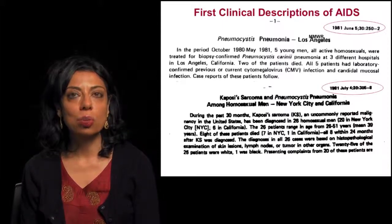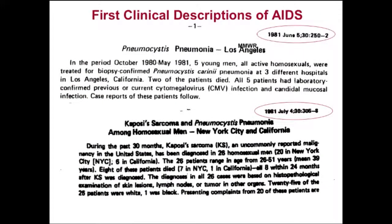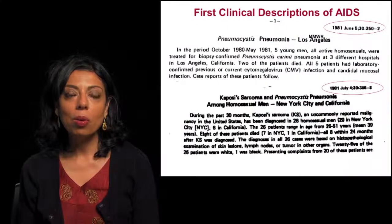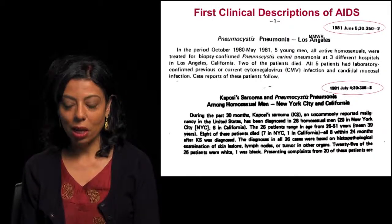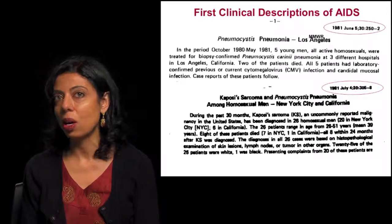The first clinical descriptions of HIV were released in June and July of 1981, and this was a huge surprise that outbreaks of very unusual infections were starting to be seen in men who have sex with men in major urban centers in the United States. These were infections like pneumocystis, Kaposi's sarcoma, and cytomegalovirus that had previously only been seen in transplant populations. We knew about AIDS in 1981, but the question became how did HIV enter human populations?